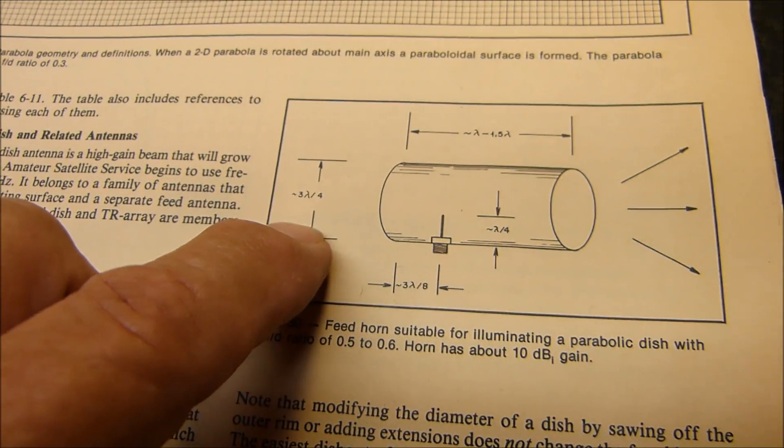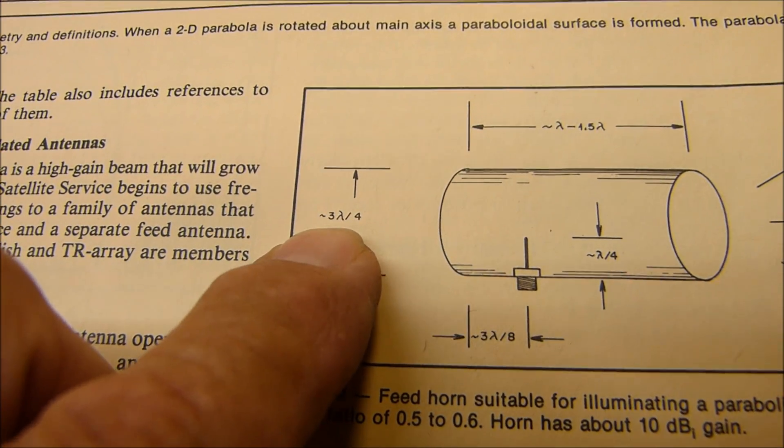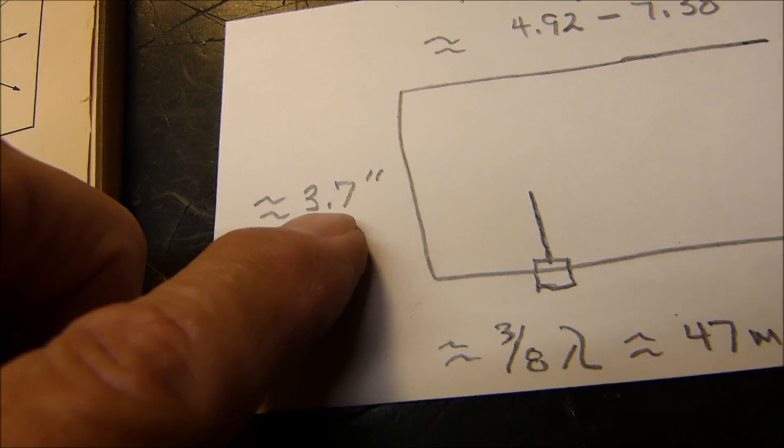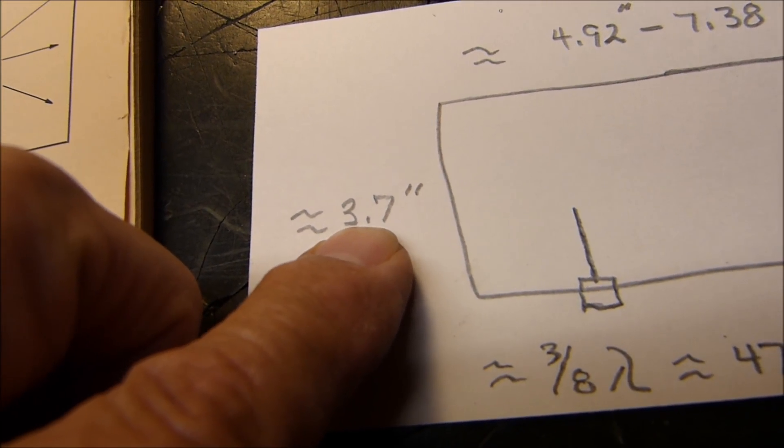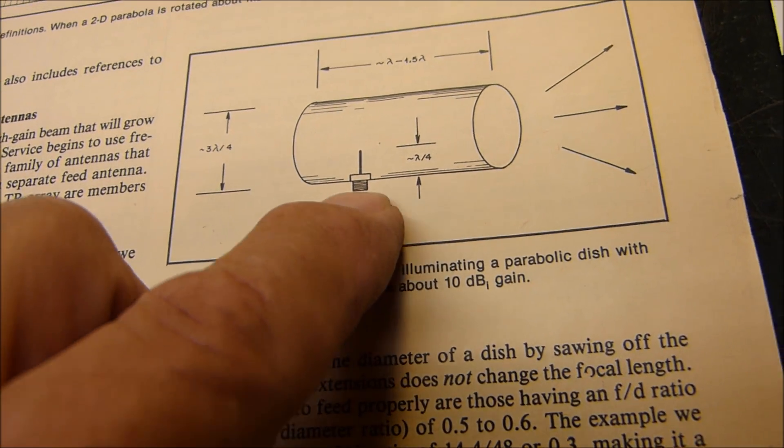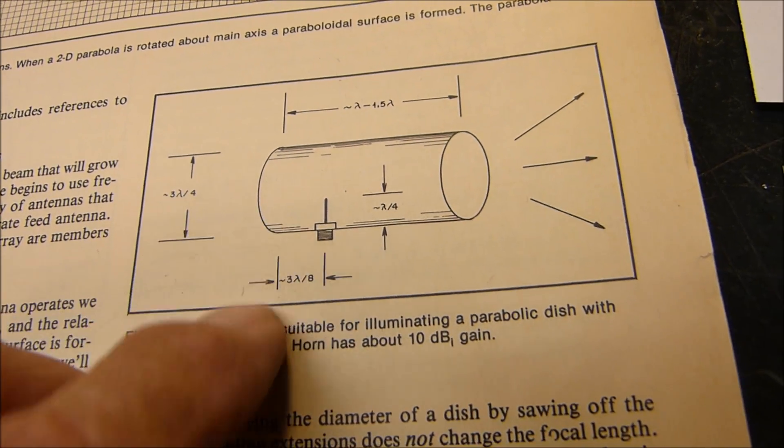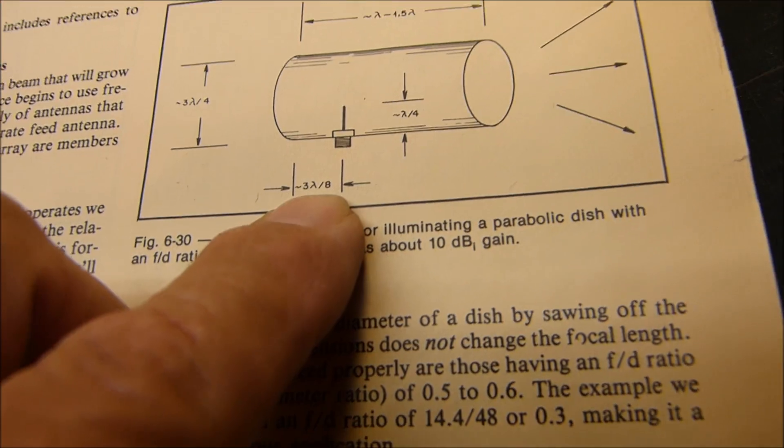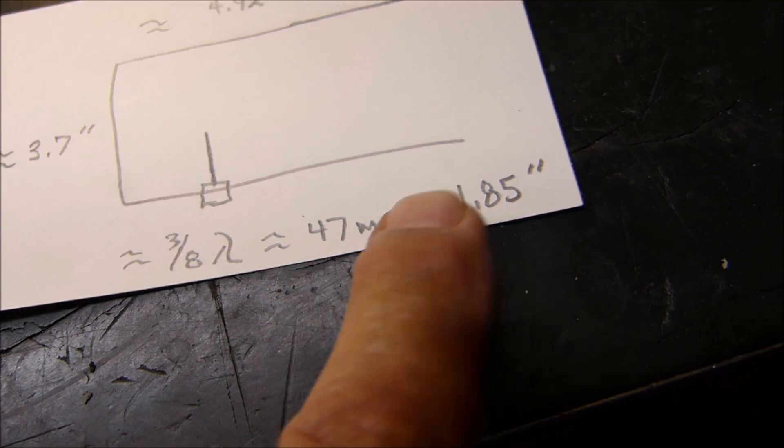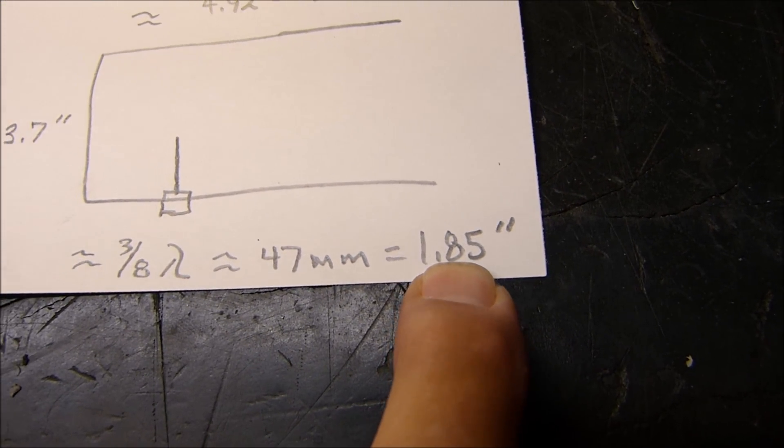He says that the diameter of the can should be approximately 3/4 wavelength. 3/4 wavelength would be 3.7 inches. And we got a 4-inch can. He says that the dimension from the monopole to the back of the can should be approximately 3/8 wavelength. 3/8 wavelength would be like 47 millimeters or 1.85 inches. I like it about 2.5 inches, personally.